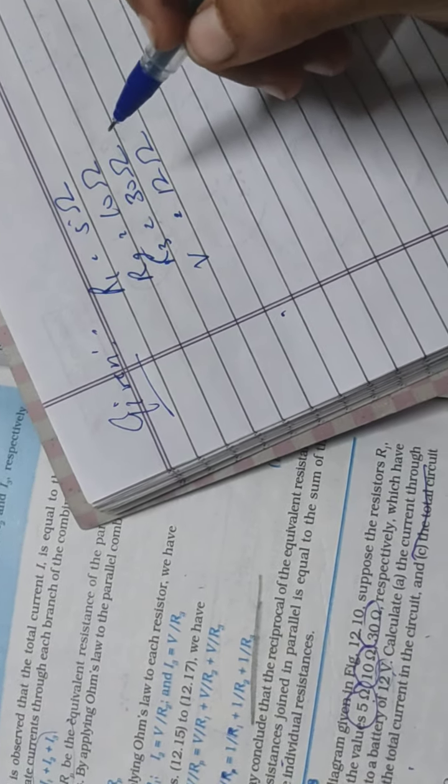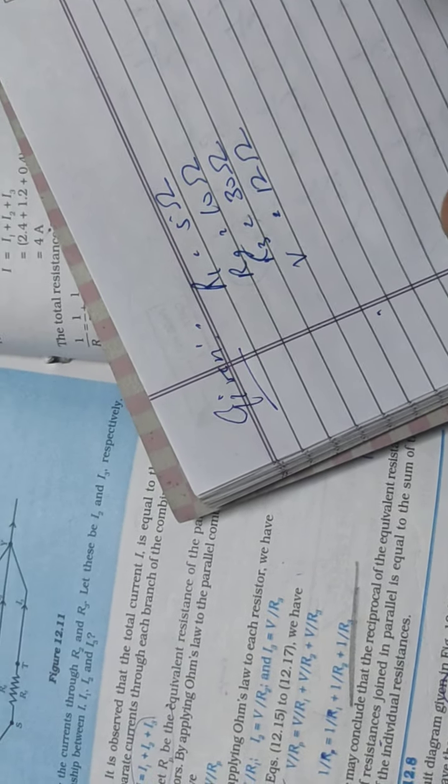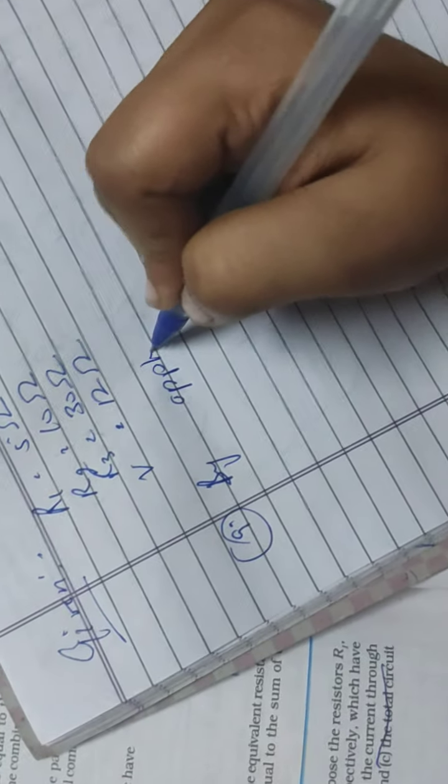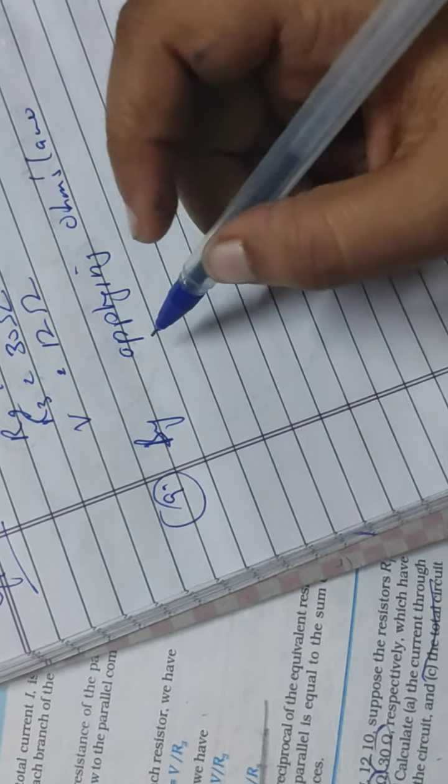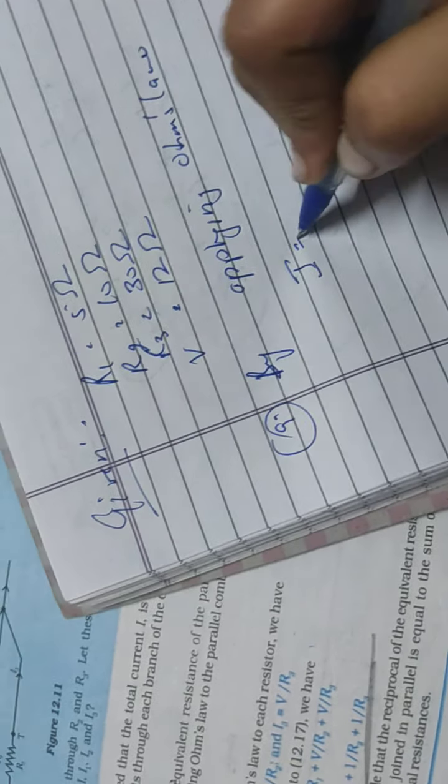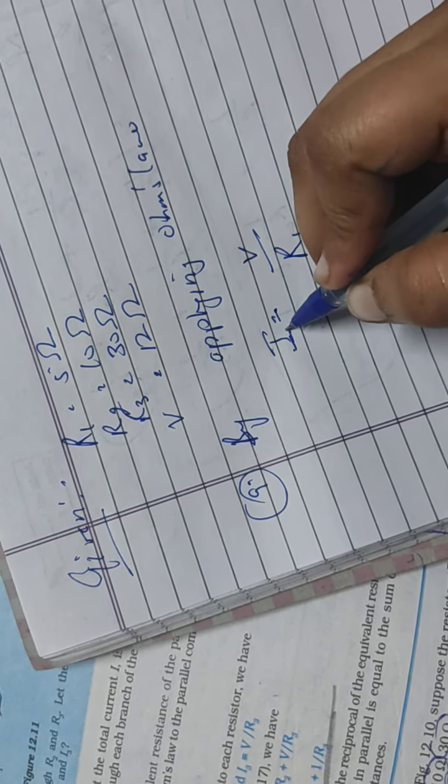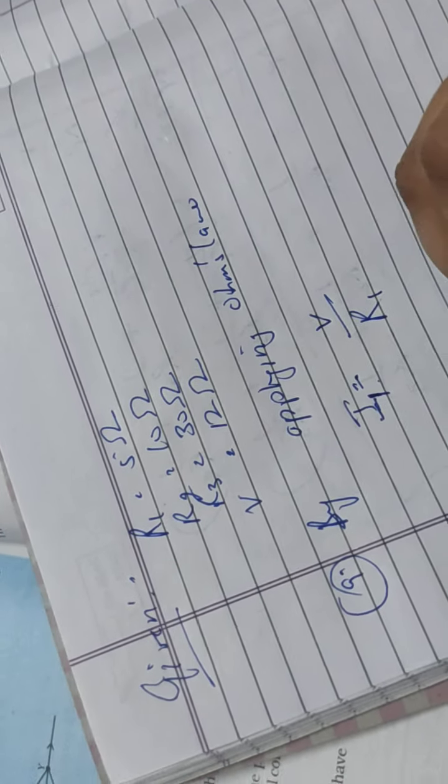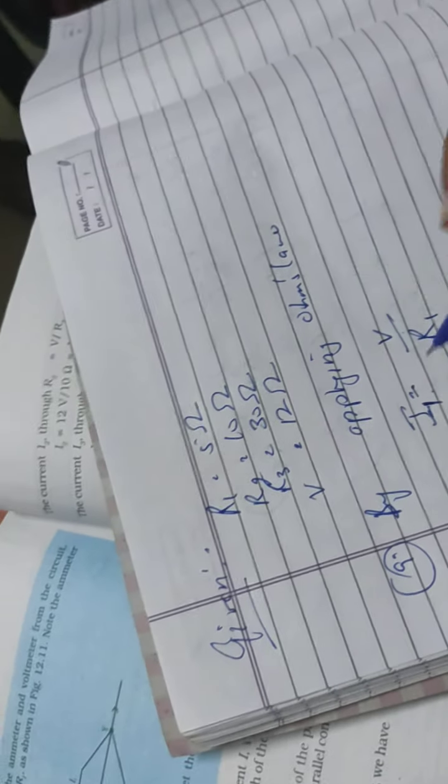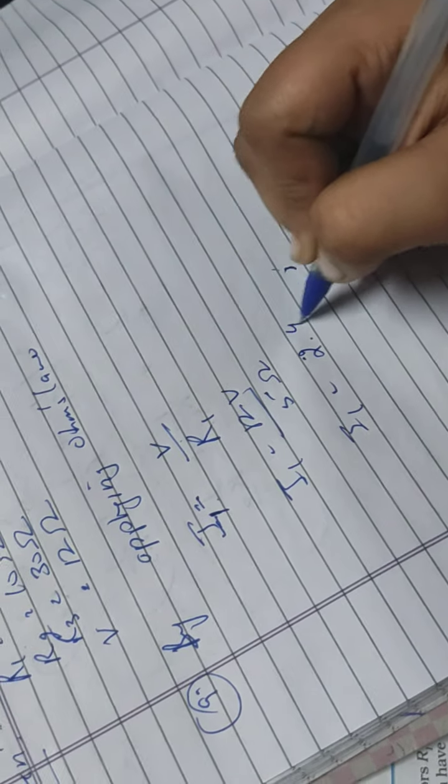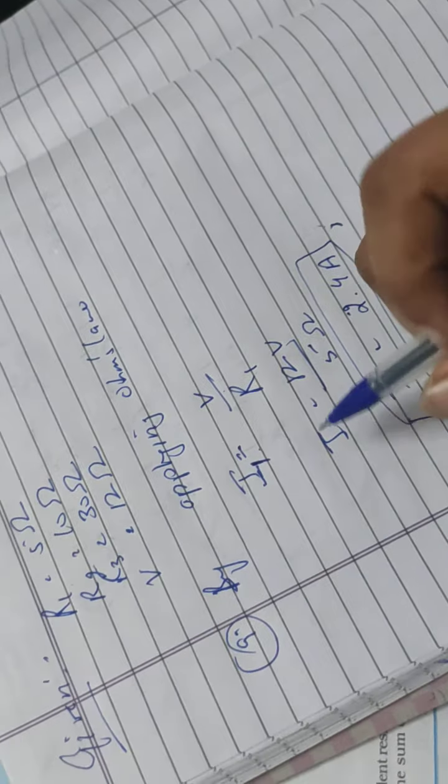Now calculate the current. By applying Ohm's law, I1 equal to V by R1. If resistance 1, then I1. So I1 is V which is 12, R1 is 5. So I1 is 2.4 ampere.